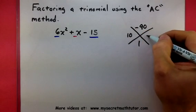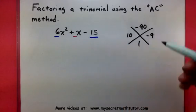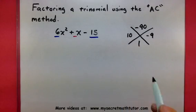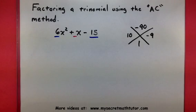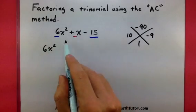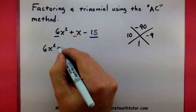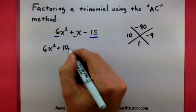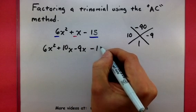I think 10 and negative 9 will work. So 10 times negative 9 multiplied to give us negative 90, but 10 plus negative 9 gives us a positive 1. That's perfect. Once you find these two numbers, you take them and you split up your middle term using these two new ones. So I'm going to write a 10x minus a 9x minus 15.